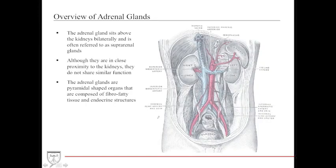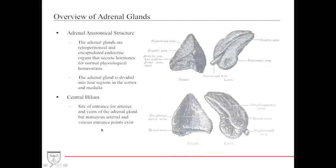The adrenal glands, also called the suprarenal glands, are bilateral organs located right above the kidneys. Although in close proximity, they have few associated functions with the kidneys besides the aldosterone/RAS axis. They are pyramidal-shaped, fatty fibrous organs with endocrine functions based on their unique histology. They are retroperitoneal, encapsulated organs that secrete hormones for normal physiologic homeostasis. Acute adrenal injury or loss of adrenal function can predispose an individual to sudden death. They also contain a hilum for the entrance of arteries and veins.